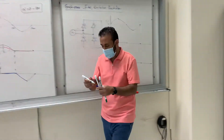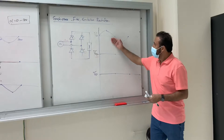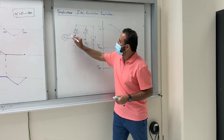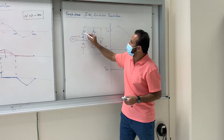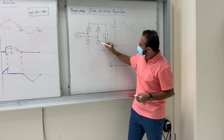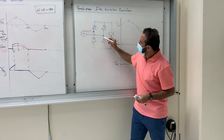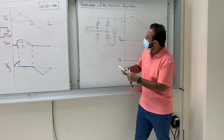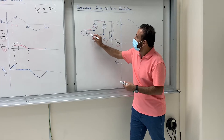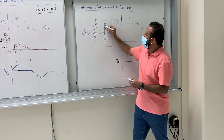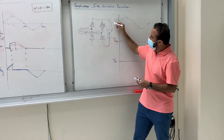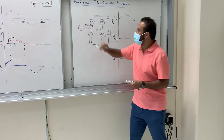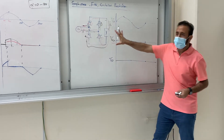Now let's look at the single-phase full-wave controlled rectifier. This is the source. The positive goes through thyristor 1 to the load, then through thyristor 2 back to the source. The negative goes through thyristor 3 to the load from the same side, then through thyristor 4 back to the source. This forms the bridge.